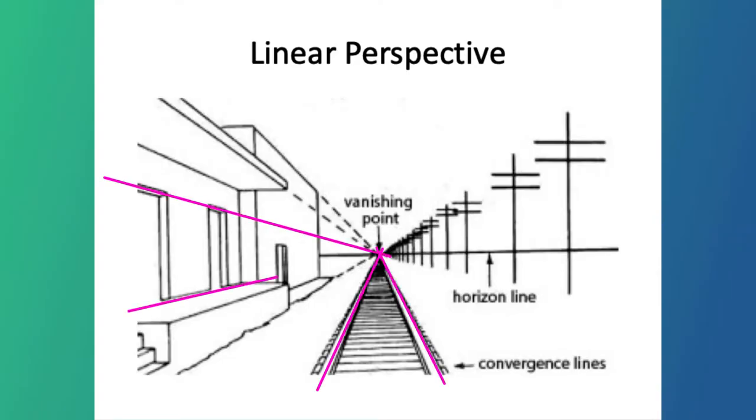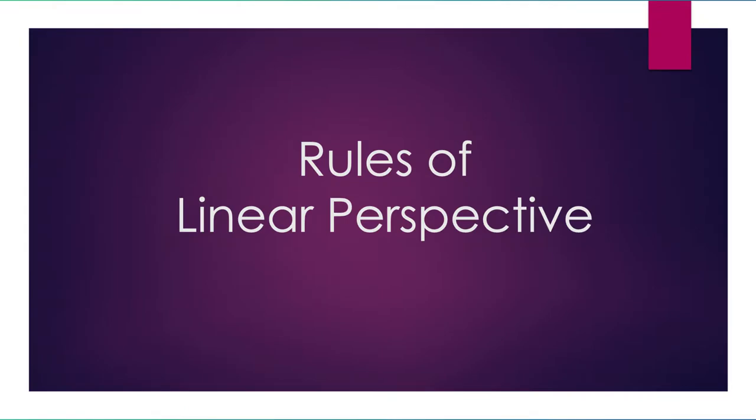Orthogonal lines, these are lines that are parallel but because of the effect of perspective will converge at a vanishing point. And transversal lines, lines that intersect those orthogonals.